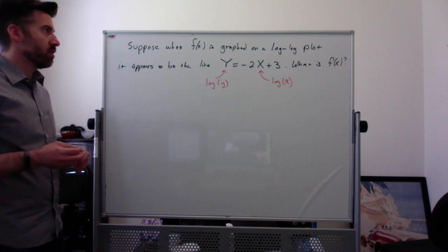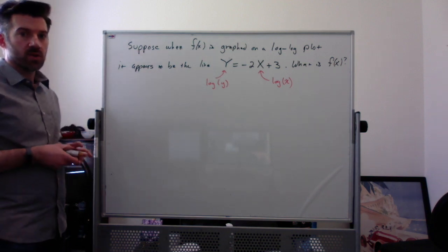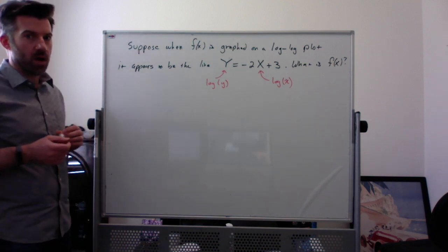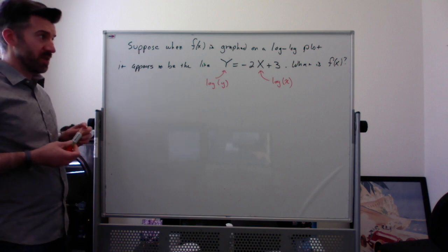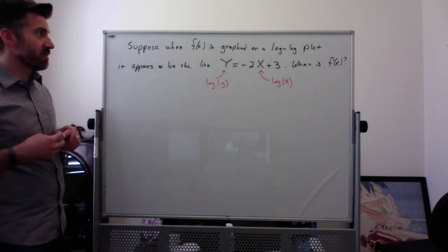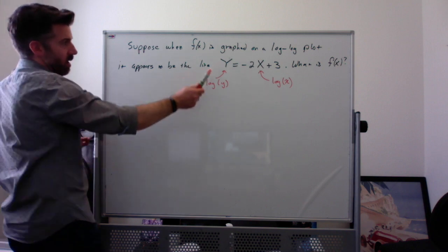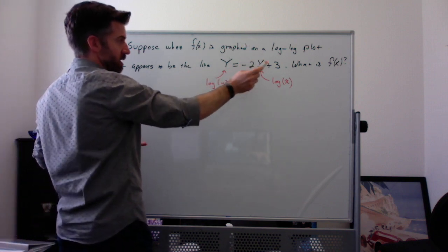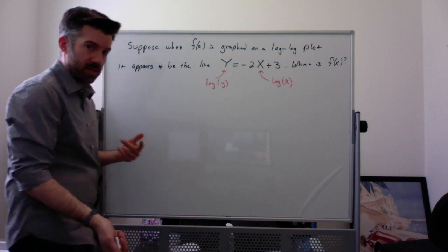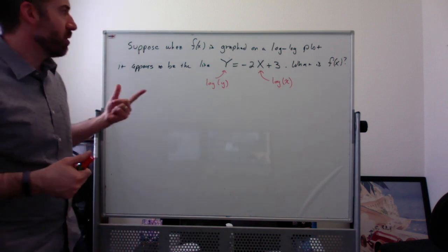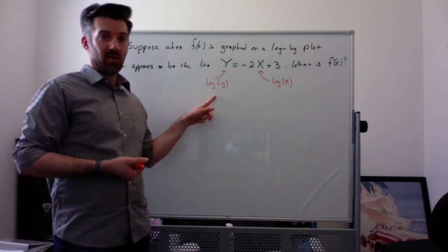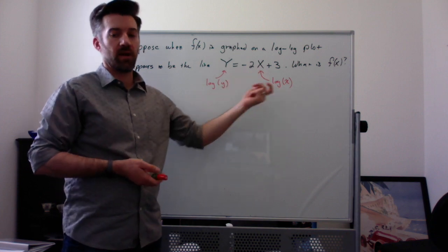Here is an example of finding the function that a log-log graph came from. Suppose that f(x) is graphed on a log-log plot and it appears to be the line Y = -2X + 3. What is f(x)? Just a reminder: when you see capital Y, that means log of your regular y, and capital X means log of your regular x.